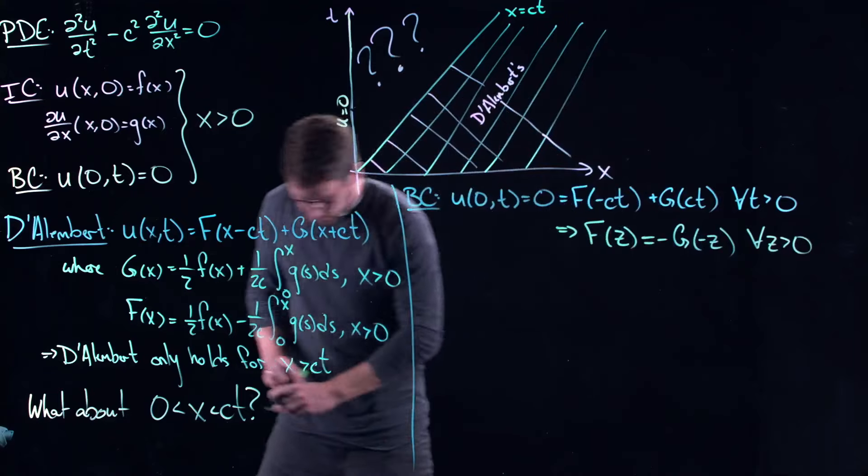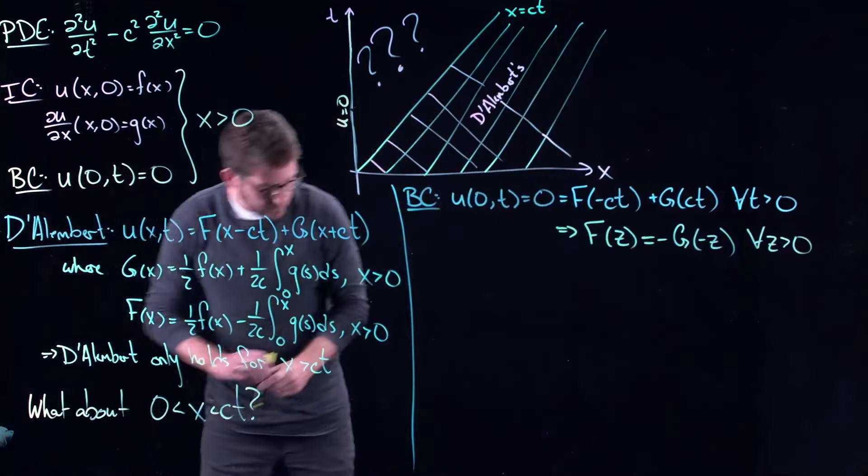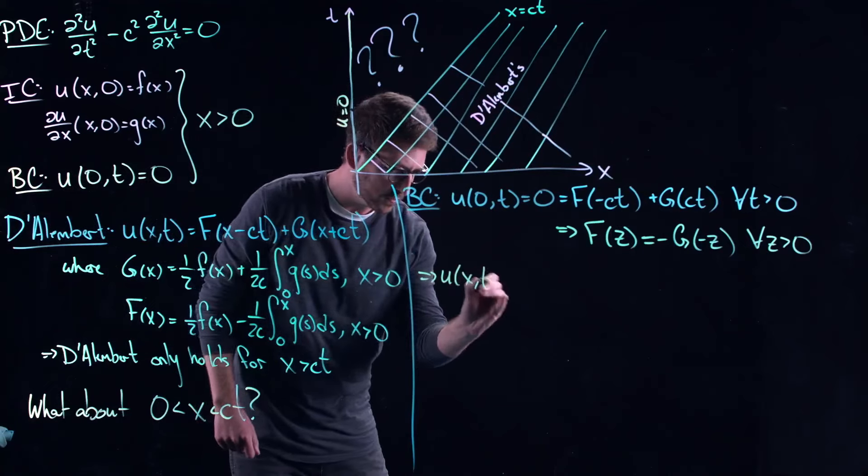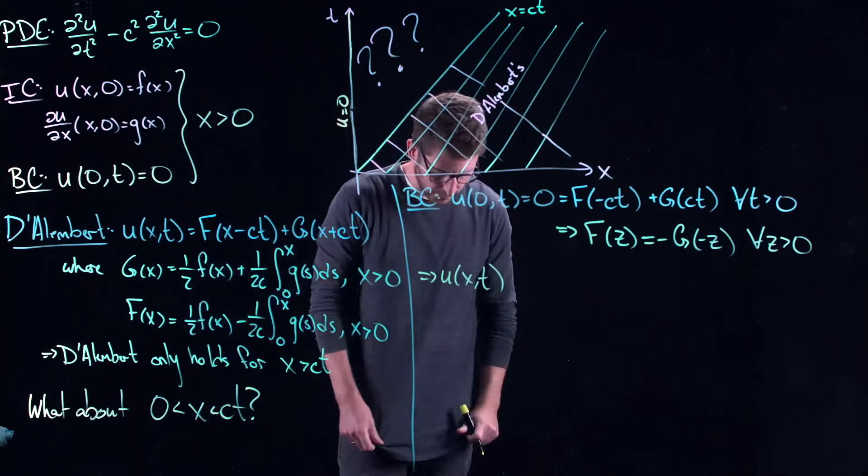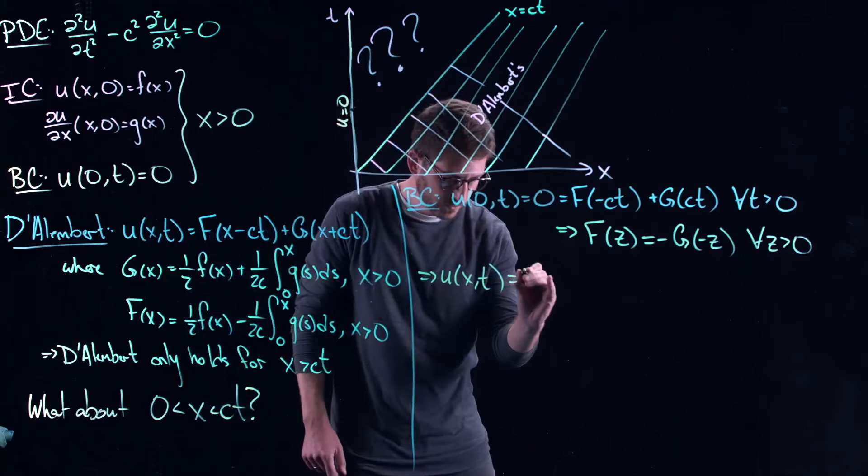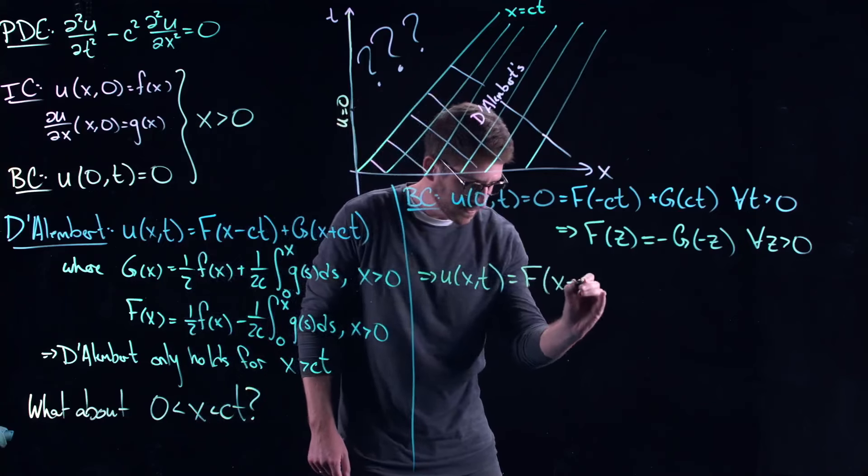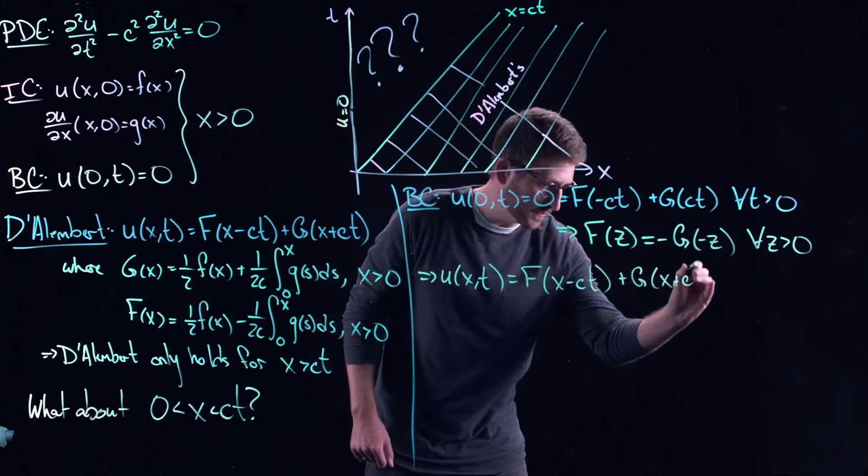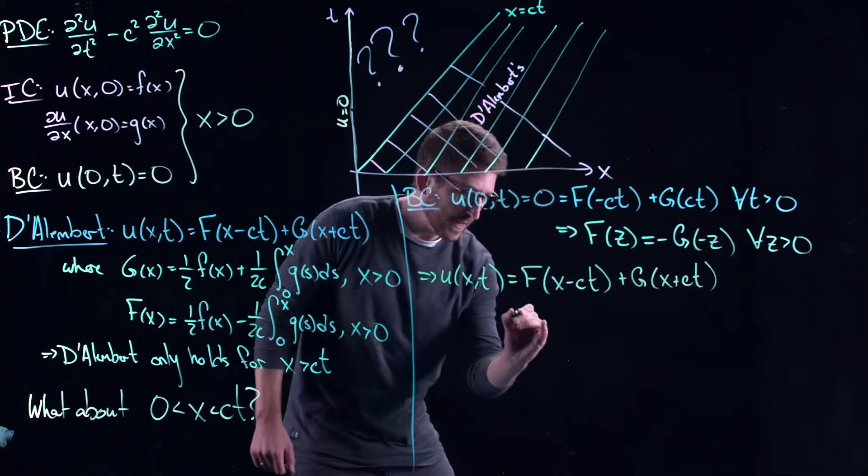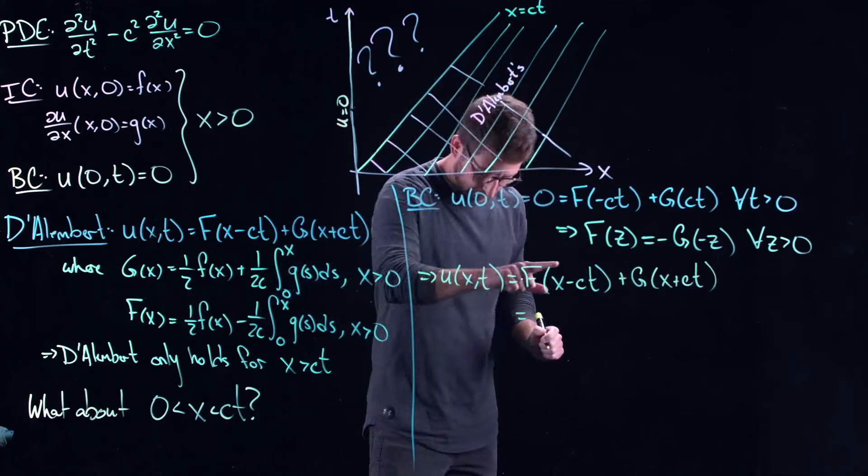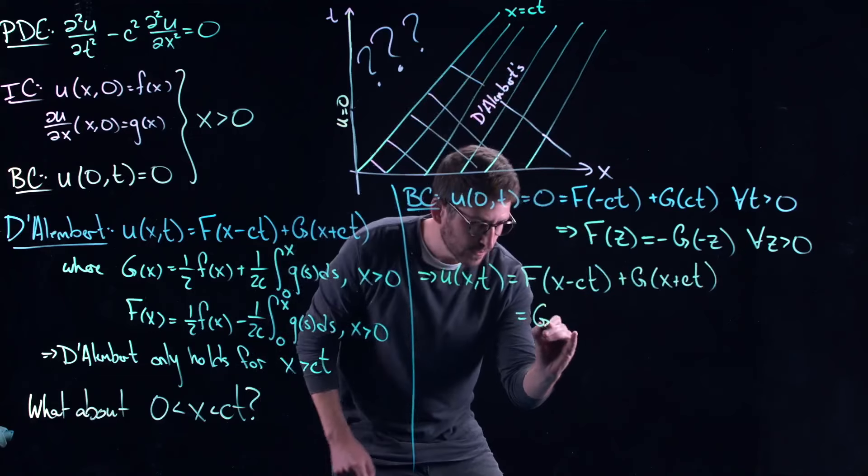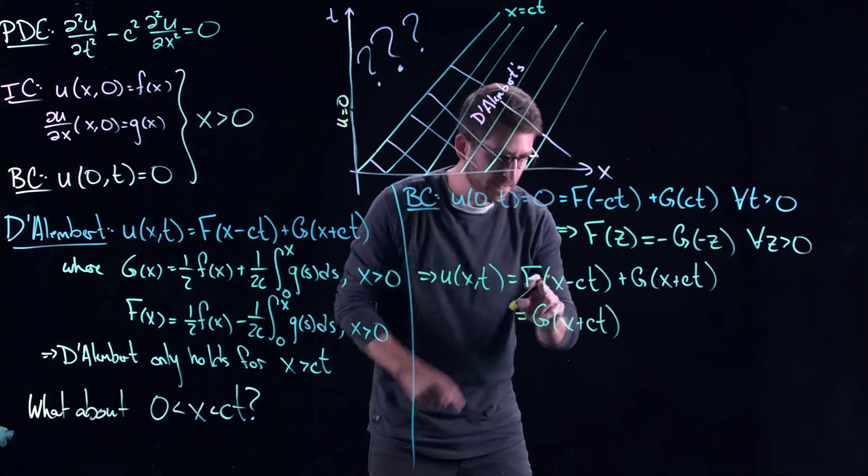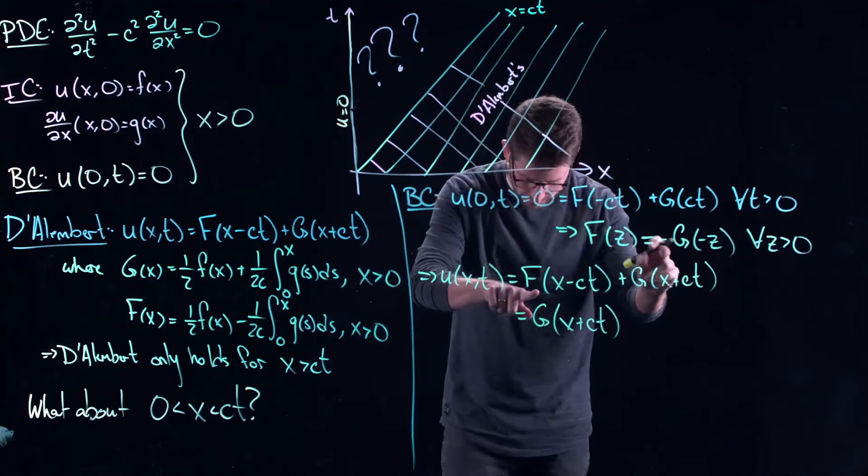So really what this says is that the capital F part of the solution at some argument z has to be equal to minus g of minus z for all z greater than 0. So what does that actually tell us?